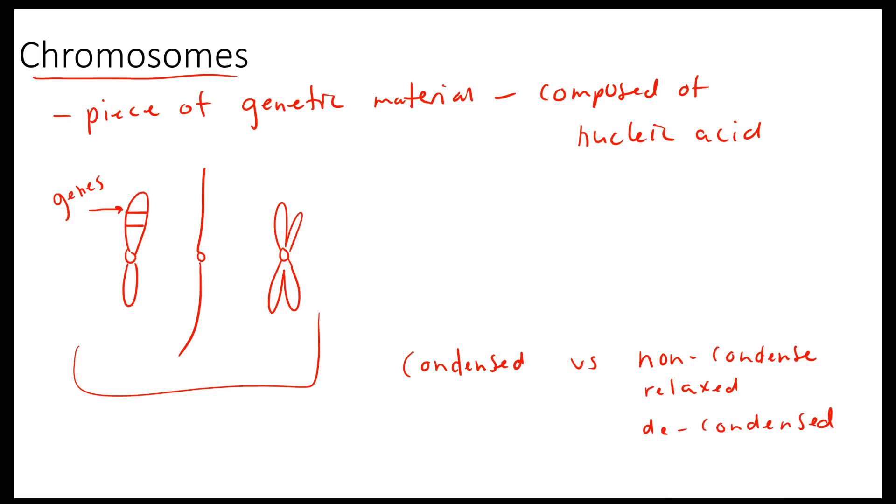You cannot visualize DNA unless it's actively dividing. So you can only see genetic material in a microscope when it's condensed. So that's what we're talking about when we draw this thing right here. So that's one chromosome. And along that chromosome, you see genes.